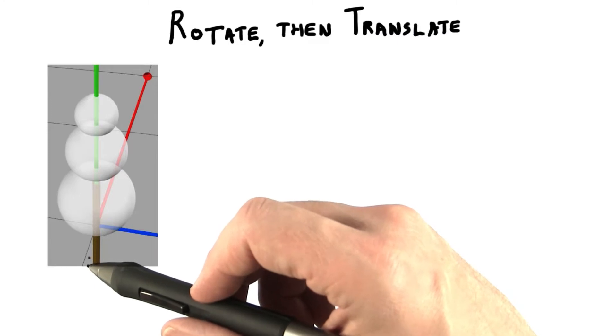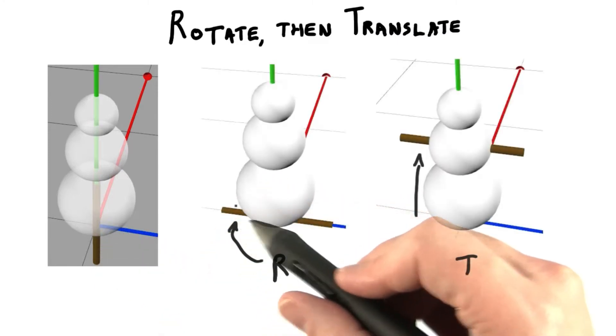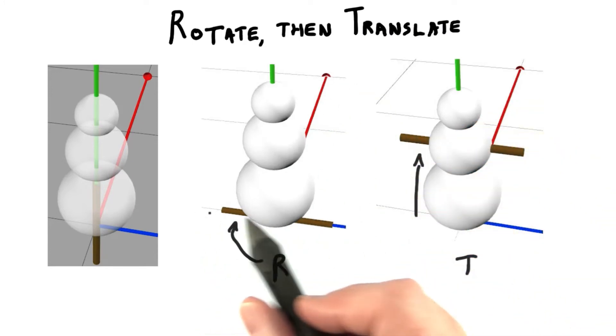Whenever you create most geometric objects in 3JS, the object is centered around the origin. The rotation along the x-axis put the stick into its proper orientation.